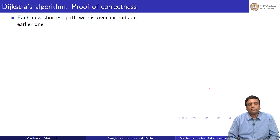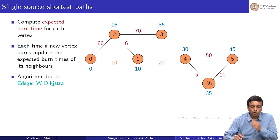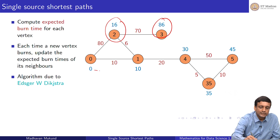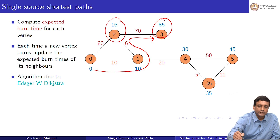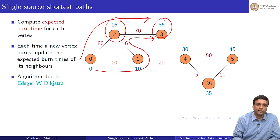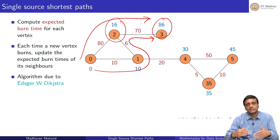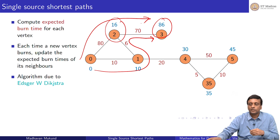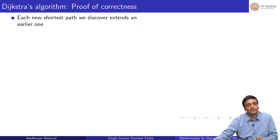Why does this work? Why is this kind of update reasonable? The idea is that every time, the new shortest path that we find extends an earlier shortest path. The shortest path to vertex 3 at time 86 is an extension of the shortest path to vertex 2. Every prefix — every beginning segment — of a shortest path is also a shortest path. Every shortest path actually extends an earlier shortest path.